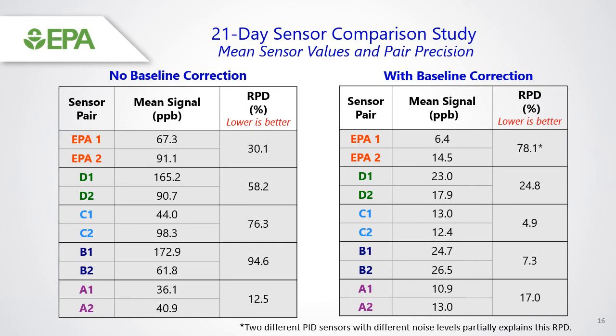After data was analyzed from the community perspective, we applied our time series baseline correction and analyzed data from the fenceline perspective. In all sensor pairs, the baseline correction removed drift envelopes and possibly some real signal, which lowered mean signal values overall. In the case of the D, C, and B sensors, this style of baseline correction eliminated a lot of the RPD. In the case of the EPA sensors, we believe the different PIDs — where one is more responsive than the other — accounts for some of the large RPD even after correction. If we were to limit the signal data to only those above a detection threshold and eliminate low-frequency data, the RPD would improve even more.